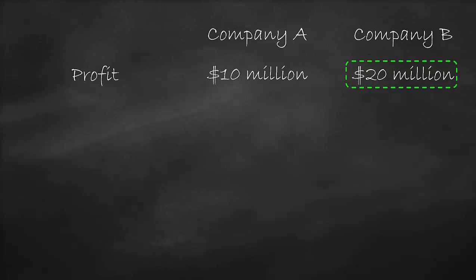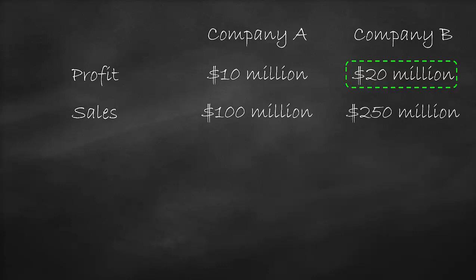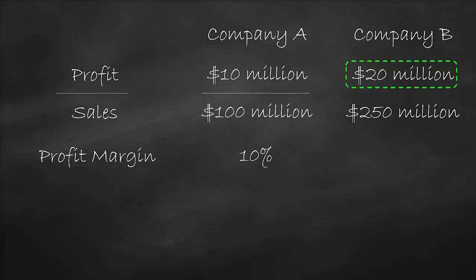But let's add another dimension. Company A has sales of $100 million, and Company B has sales of $250 million. If we divide profit by sales, we will get the profit margin. Company A has a profit margin of 10%, which is calculated at $10 million divided by $100 million. Company B has a profit margin of 8%, which is calculated at $20 million divided by $250 million.